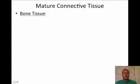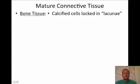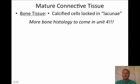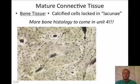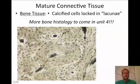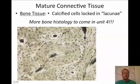Our next connective tissue type is bone — calcified cells locked inside lacunae; more detail on bone histology will come in Unit 4. For now, just be able to recognize bone tissue — it kind of looks like tree rings. The big dark center spot is the central canal, not a cell. The individual cells are the little dark spots arranged around it. Be careful when drawing: do not label the central canal as a cell — use your book as a guideline.